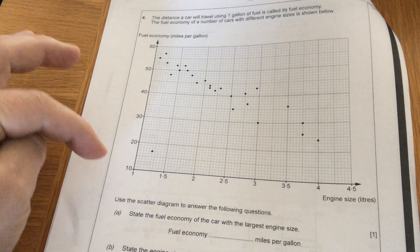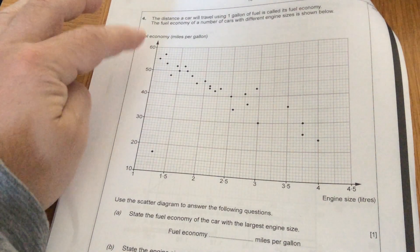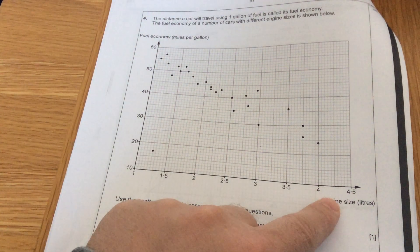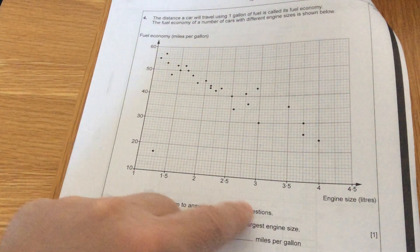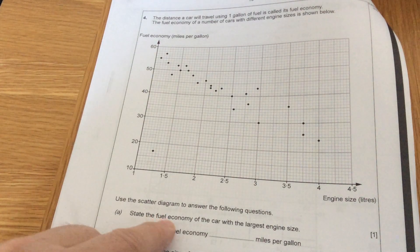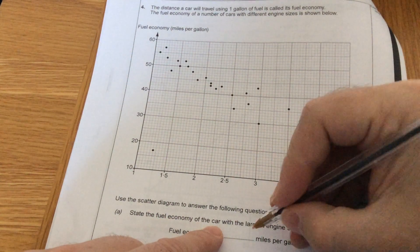So the fuel economy in miles per gallon goes up 10, 20, 30, 40, 50, 60, and going across is the engine size in litres. Use the scatter diagram to answer the following questions. State the fuel economy of the car with the largest engine.